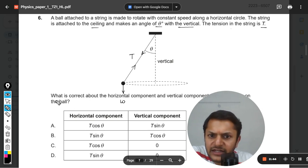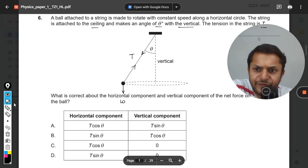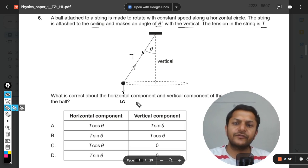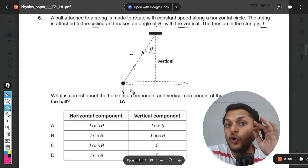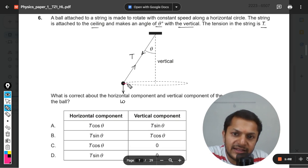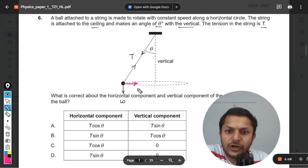What is correct about the horizontal component and the vertical component of the net force on the ball? So many students are talking about the net force first of all. In these kinds of cases, the net force is the resultant of these two forces because there is no third force acting on this. Clearly the resultant of this will provide the essential centripetal force to the ball to move in circular motion.